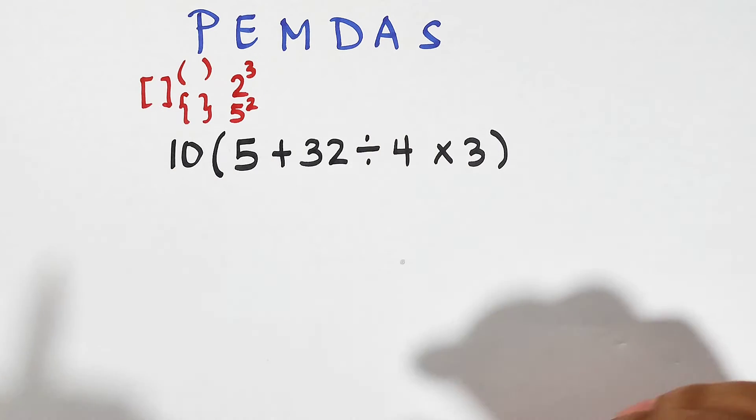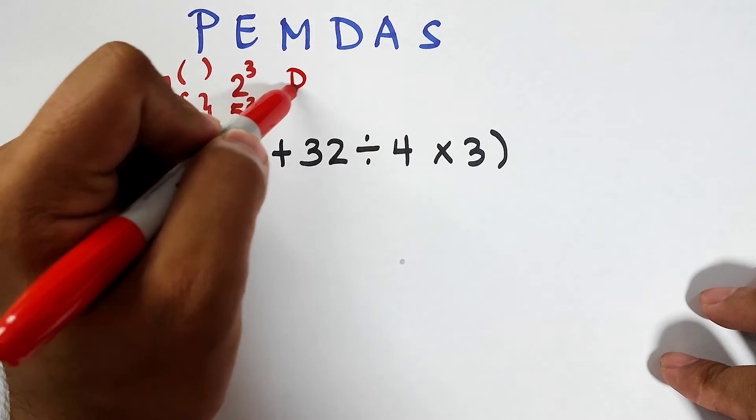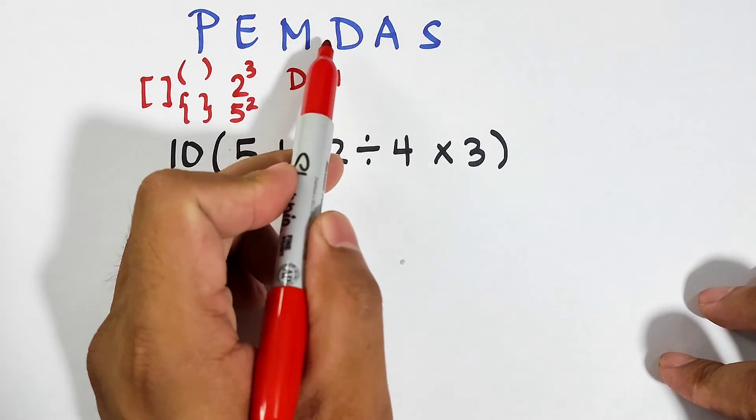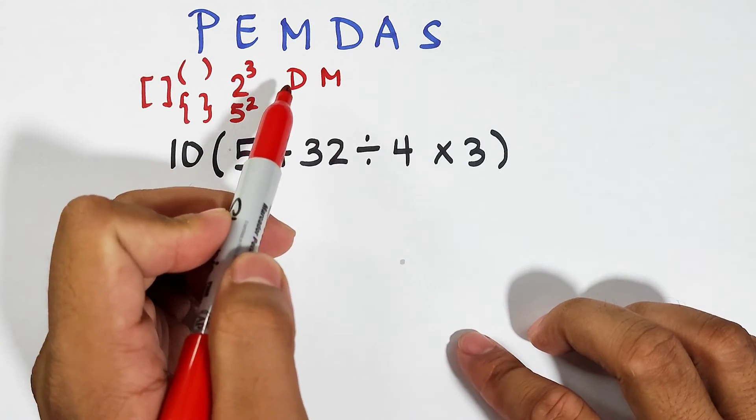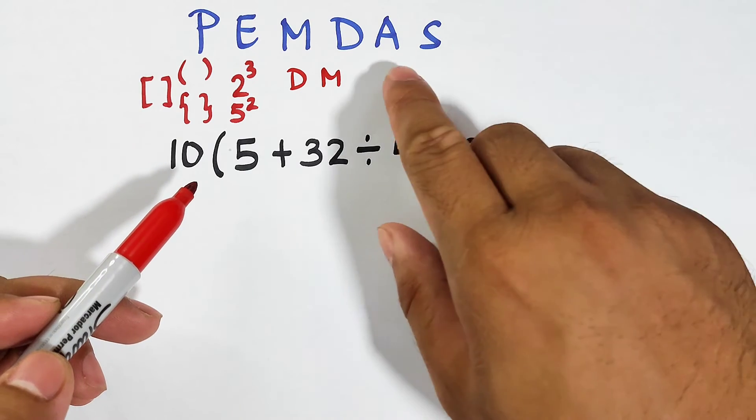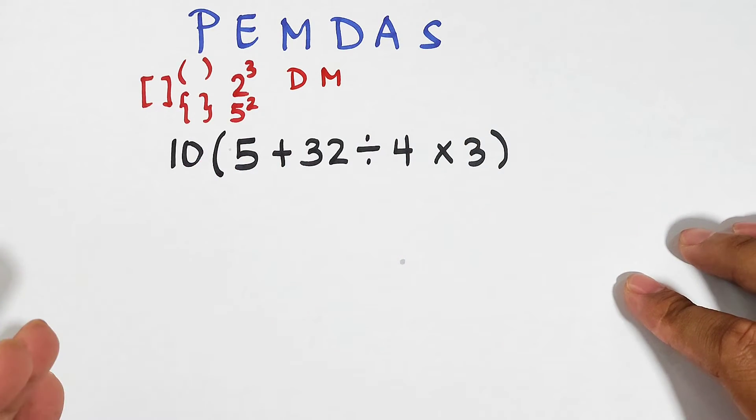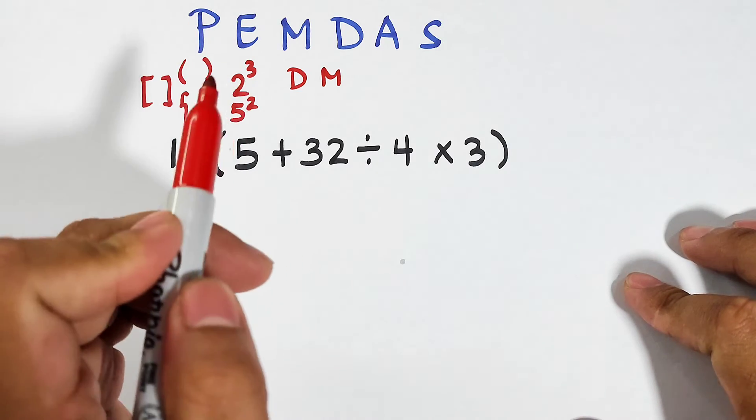Same with addition. This one is division multiplication, again multiplication division, or division multiplication. Whichever comes first from left to right, we will perform the operation. So we can have addition or subtraction, or subtraction and addition.